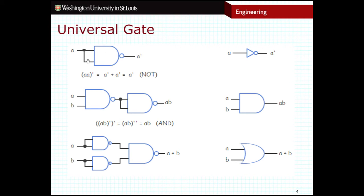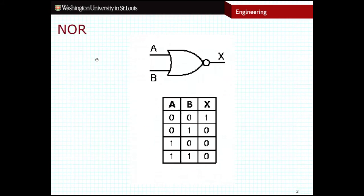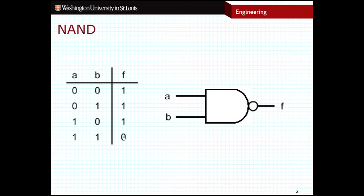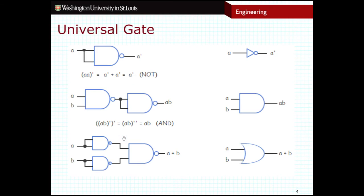If you look at the inverter, both inputs are wired together. So if A is high, both inputs will be high, which means the output will be low. And if A is low, both inputs will be low, and the output will be high — just like an inverter. The configuration for an AND gate is just a NAND gate with an inverter attached to the end to counteract the inverter that's part of the NAND gate.